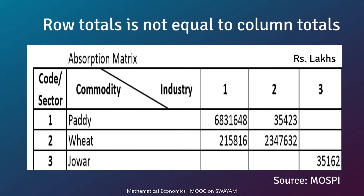The sum of columns shows the total input required by the industry. Since the table is a commodity by industry transaction presentation, the row totals do not tally with the column totals.